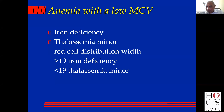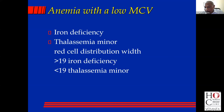How do you distinguish the two? If you have the indices, then you look at the red cell distribution width. If you have a lot of anisocytosis, which means the RDW is more than 19, then you are dealing with iron deficiency. Medical students often ask me why. I think it's because in different parts of the marrow, the amount of iron available may be different, and therefore the red cell size is different and you have anisocytosis.